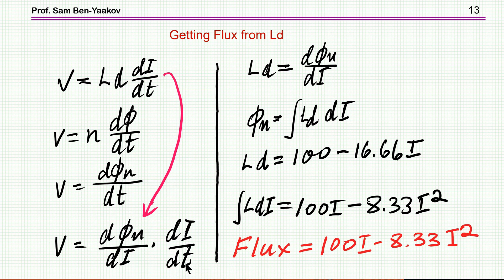So what happens is that if I compare now this equation to this equation, dI/dt is the same, I come to the conclusion that d phi dI is equal to LD, because this term is the same. So I understand now that LD is equal to d phi dI.